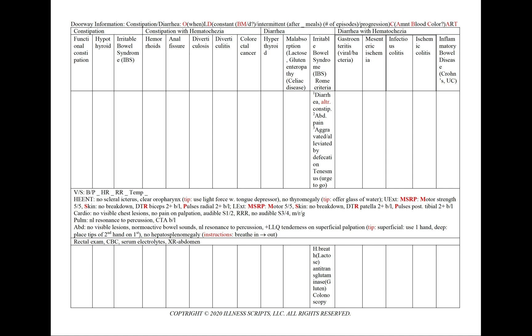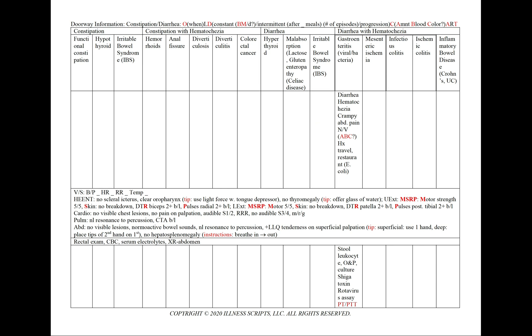Our IBS workup again focuses on ruling out other conditions, so we'll order a hydrogen breath test to rule out lactose intolerance, antibodies to anti-transglutaminase to rule out gluten enteropathy, and a colonoscopy to rule out IBD. In gastroenteritis, we'll see diarrhea with hematochezia, crampy abdominal pain, nausea, and a history of travel or restaurant exposure. We'll order a stool leukocyte, OMP, and culture, plus a shiga toxin and rotavirus assay, and PT and PTT for any blood in the stools.